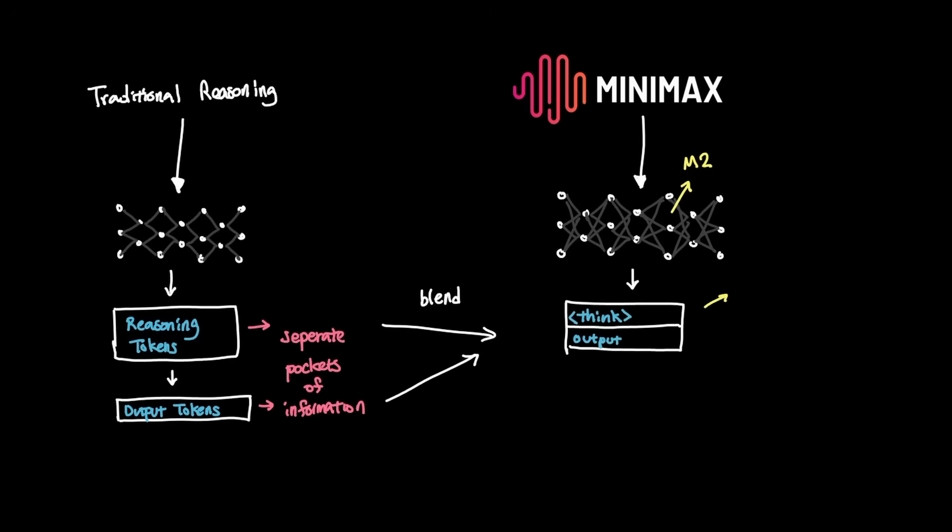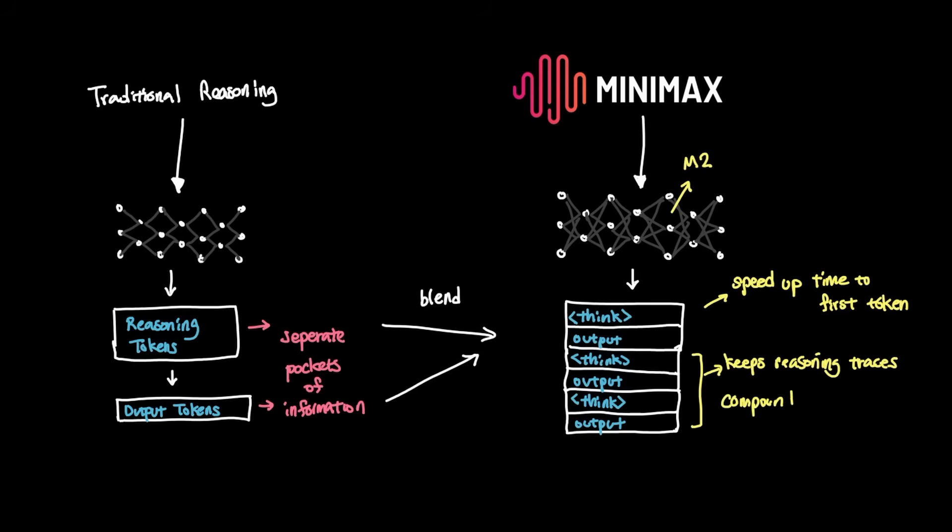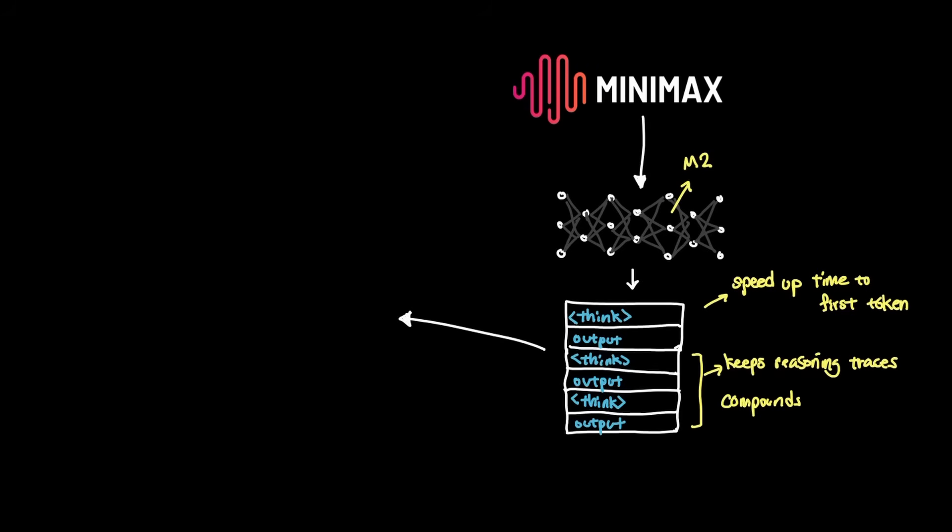This technique, called interleave thinking, allows the best of both worlds by speeding up the time to first token generation, and also the ability to keep reasoning traces that compounds turn after turn. And as you can see, this type of technique is extremely valuable, not only when it comes to cost, but also when it comes to agentic tasks.